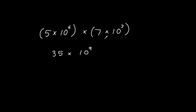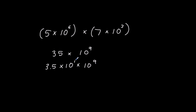Now that question isn't finished because the answer is not in standard form. 35 is bigger than 10, so we can't have it, because a number in standard form has to have the number at the front between 1 and 10. So we're going to have to write this as 3.5. So 35 is 3.5 times 10, so that's 3.5 times 10 to the power of 9. Now 10 by itself is to the power of 1, so we've got 10 to the power of 1 multiplied by 10 to the power of 9, which is 10 to the power of 10. That's the final answer.